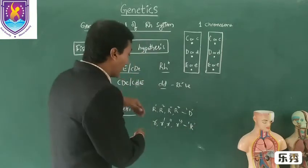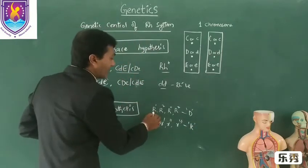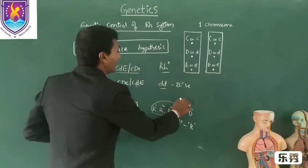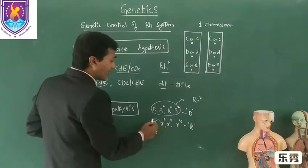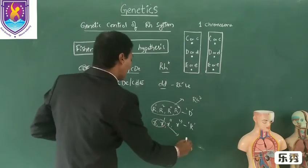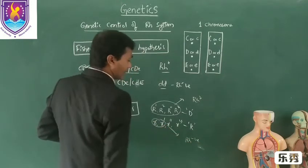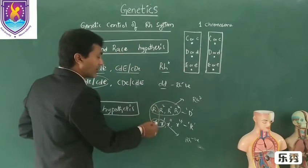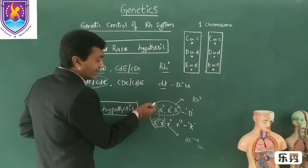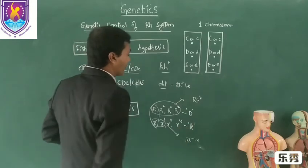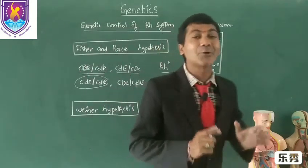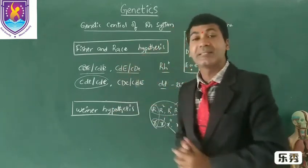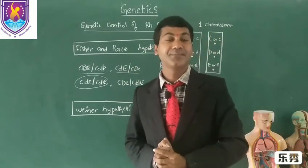When they are pairing, the pairing of dominant with dominant will give rise to Rh positive. If the pairing of both recessive will give rise to Rh negative. The pairing of dominant and recessive, because of the dominant allele, also produces Rh positive. This is the genetic control of the Rh factor in human beings. Thank you.